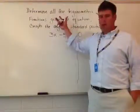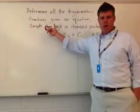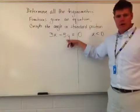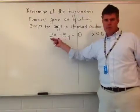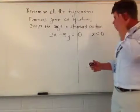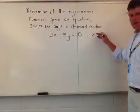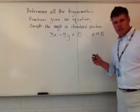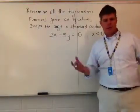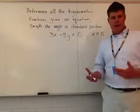Okay, so what we're going to talk about here is how do I figure out the trigonometric ratios and functions based off of an equation in standard form. So I have a linear equation here in standard form, 3x - 5y = 0, and I want to figure out the trigonometric ratios. The parameter here is that the x values are going to have to be less than 0.